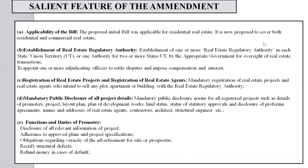Talking about the salient features of the amendment: the first salient feature is applicability. The proposed initial bill was applicable only for residential real estate; it is now proposed to apply to both residential and commercial real estate. The second feature is the establishment of real estate regulatory authority — one or more in each state or union territory, or any authority for two or more states, established by the appropriate government for oversight of real estate transactions. They will appoint one or more adjudicating officers to settle disputes and impose compensation and interest.